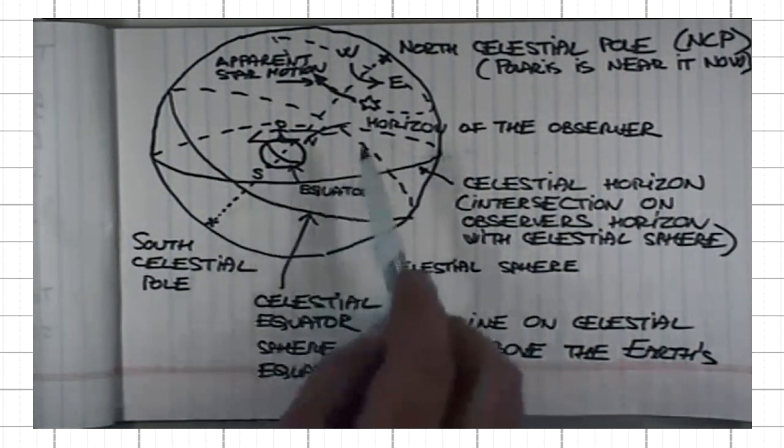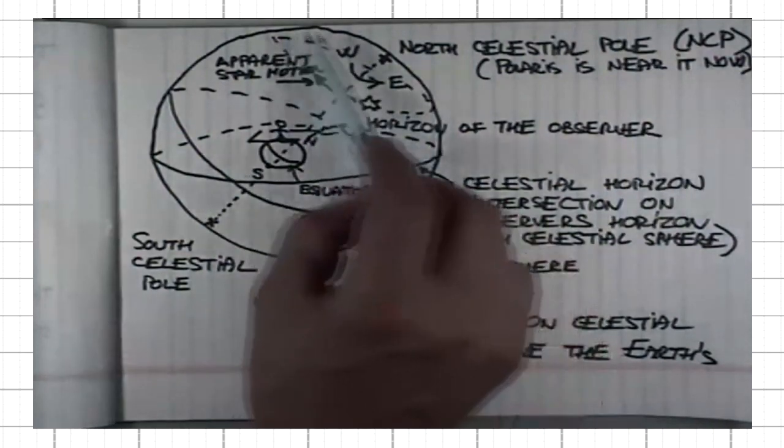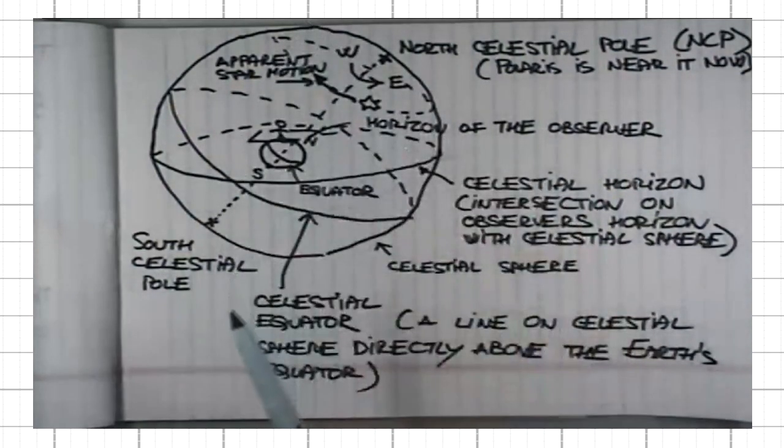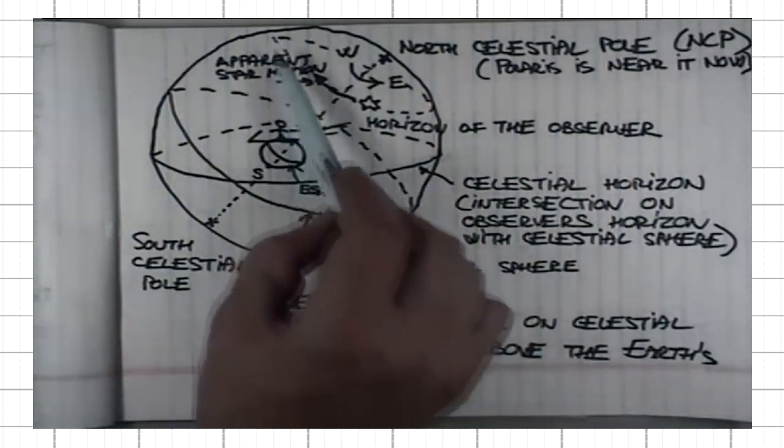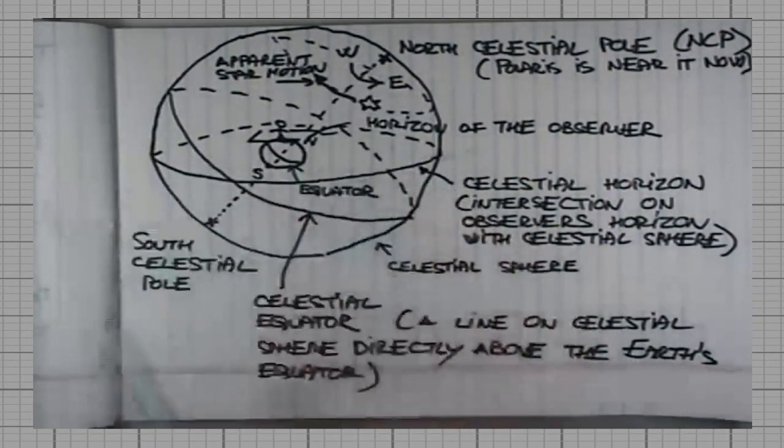Note that this circle outlining the path of the star due to, apparent path of the star, due to its daily motion, is actually parallel to celestial equator.